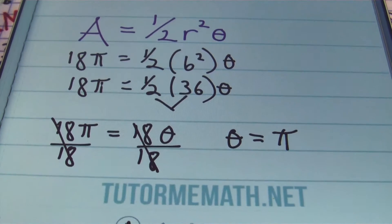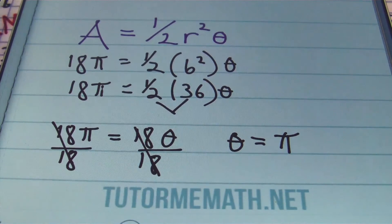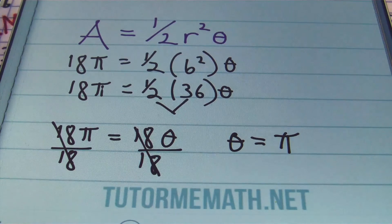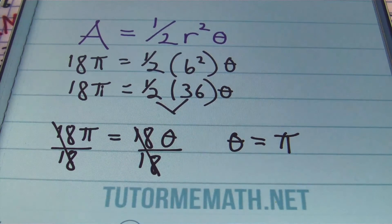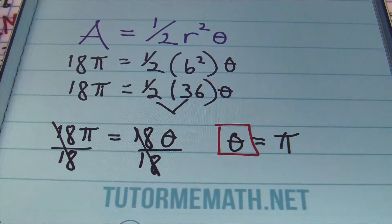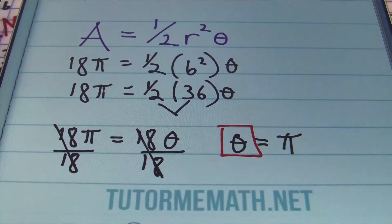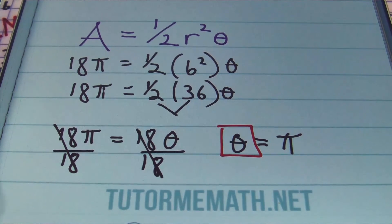If you want decimal notation for that, plug π into your calculator and round to the nearest thousandths place, or whatever your textbook or teacher specifies. For our next and last problem, I'll hand it over to our mascot, Kappa the math monkey.